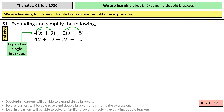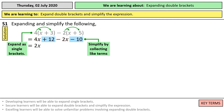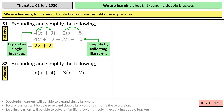Then we need to collect our like terms. So 4x take 2x will give us 2x, and 12 take 10 will give us 2.